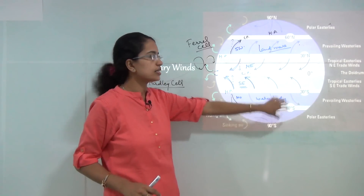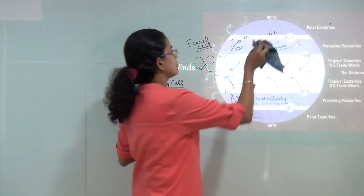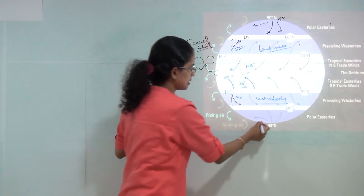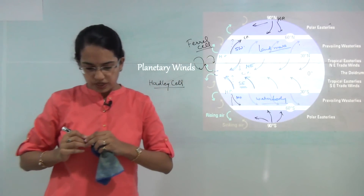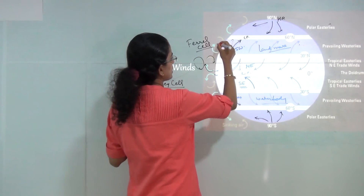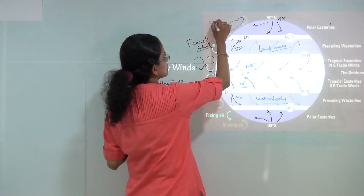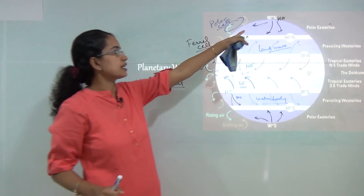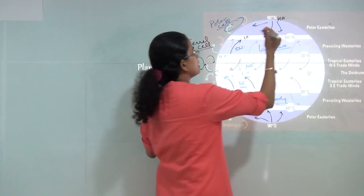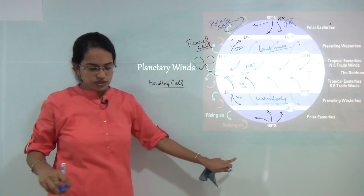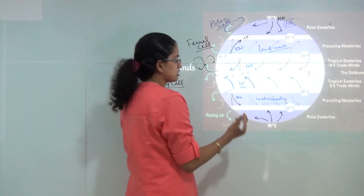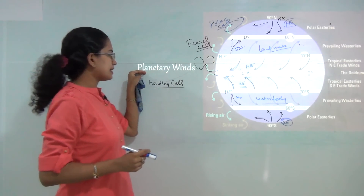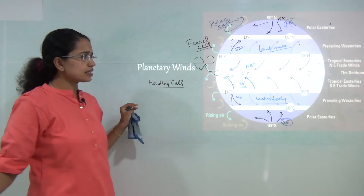Finally, the high-pressure polar regions produce winds that blow towards the low-pressure subpolar region. These are known as polar easterlies and are part of polar cells. In the north pole they originate from the northeastern side moving towards the western side — northeast polar winds — and in the south they originate from the south and eastern side — southeast polar winds. Together, the Hadley cell, Ferrel cell, and polar cell make up the three-cell model.